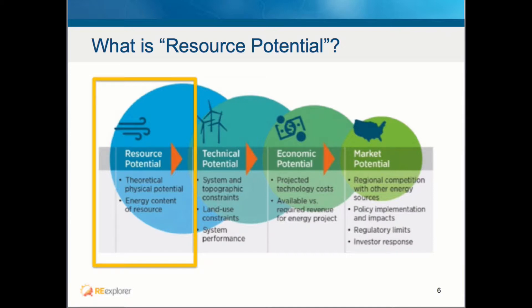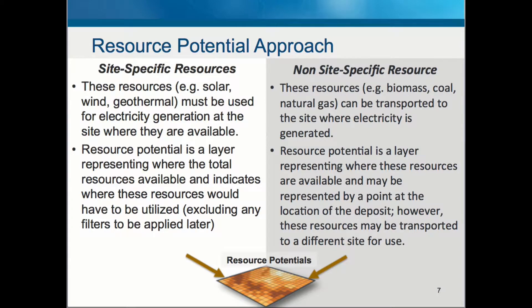Let's describe what resource potential means. Resource potential can be either site-specific or non-site-specific. Site-specific resources include solar, wind, and geothermal, where electricity generation must occur at the site where these resources are available. Resources like biomass, coal, and natural gas can be transported from the site where they are available to locations where electricity is generated. Resource potential for site-specific resources is a layer showing where total resources are available and where they would need to be utilized.